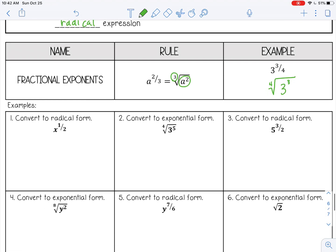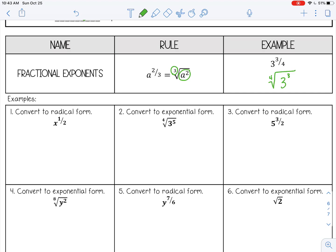So the first example converts to radical form. x to the one-half power, that's the square root of x to the first power. Now you can also just write this as the square root of x because x to the first power is x, and a radical with no number is understood to be a square root. So either way is fine.